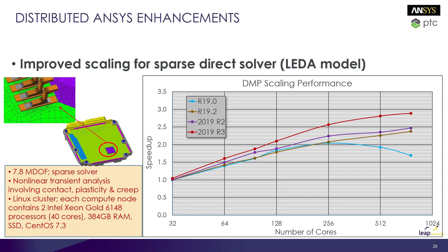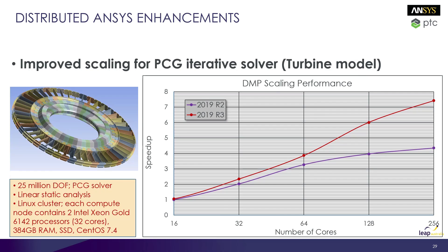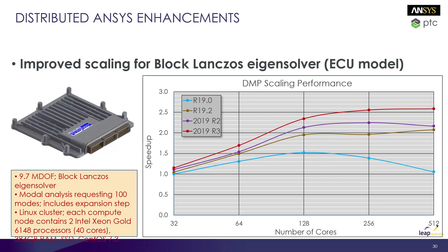On the performance note, ANSYS has a strong commitment to improve solver performance across the entire product suite with every release, and this continues with R3. Looking at the sparse direct solver compared to previous releases, there is an improvement especially at higher core counts. For the PCG solver, there is also a significant improvement compared to the R2 release. For the Blocklauncher eigensolver, a similar trend is seen at very high core counts, with a huge jump compared to R19 even at smaller core counts.